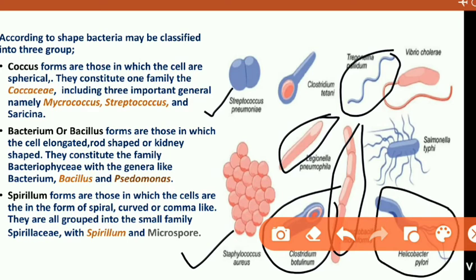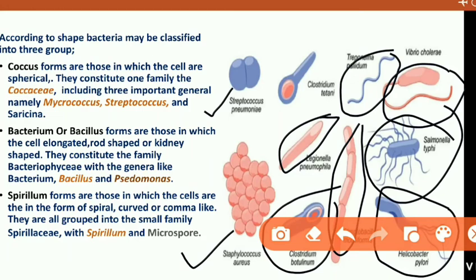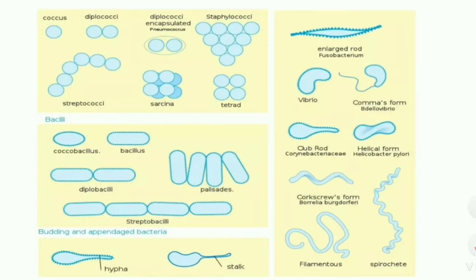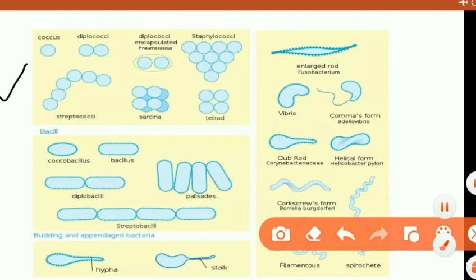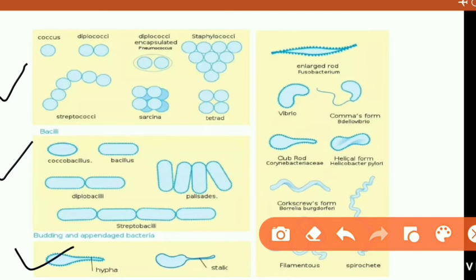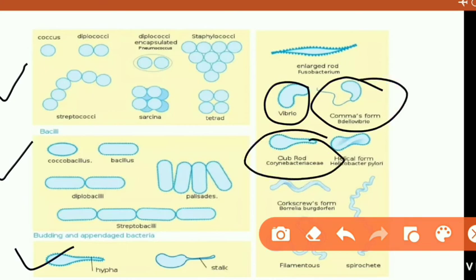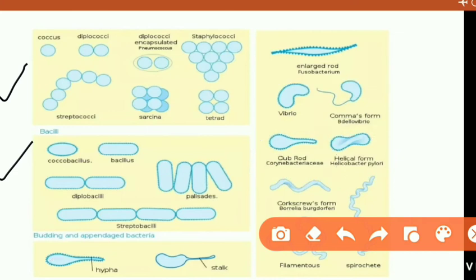We can see the different types of bacteria. Comma-shaped bacteria include Vibrio, Salmonella typhi, and others. You can see the structure includes rod-shaped bacteria, Diplococcus, two bacilli, Streptobacilli, palisade-elongated form, comma shape, club shape, helical form, and corkscrew form. All these are different shapes of bacteria which are classified on the basis of their morphology.